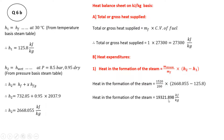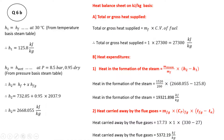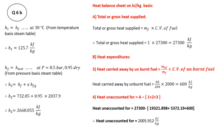Next, we find the heat carried away by the flue gases using Q = m·CP·ΔT. Mass of flue gases is already given per kg of fuel burned as 17.73 kg, specific heat of flue gases is 1 kJ per kg Kelvin, temperature of flue gases is 330 degrees centigrade, and boiler room temperature is 27 degrees centigrade. Therefore, heat carried away by the flue gases comes out to be 5372.19 kJ per kg.